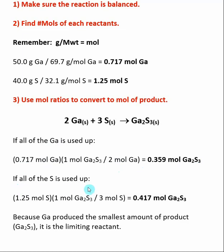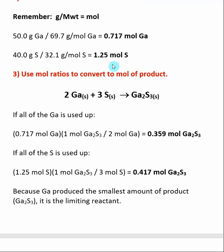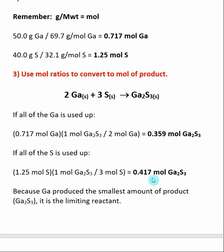We do the same thing for sulfur — and remember, there can be more than two reactants, so you do this step for each one. We calculated that we have 1.25 moles of sulfur to start with. If we use up all the sulfur, how many moles of gallium sulfide will be made? The reaction shows a 3-to-1 mole ratio: for every 3 moles of sulfur used, 1 mole of gallium sulfide is made. Moles of sulfur cancel, and we take 1.25 divided by 3 to get 0.417 moles of gallium sulfide.